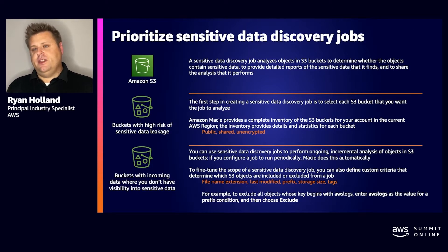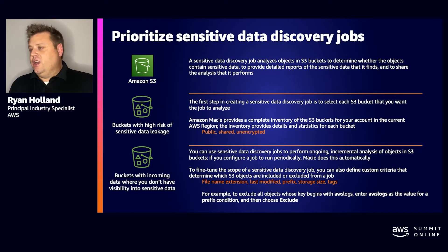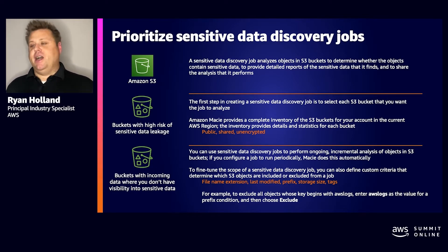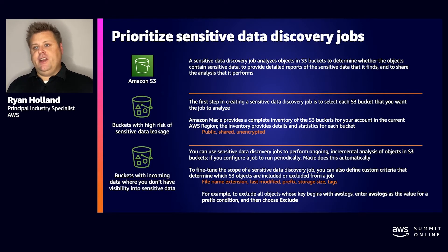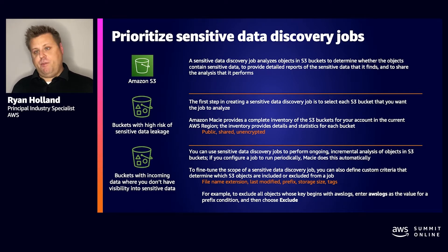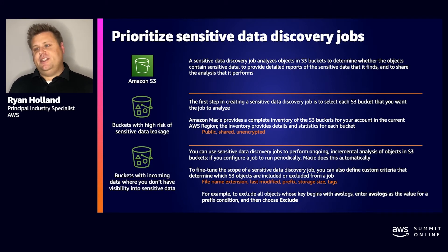The other important use case for this inventory and security metrics is to help you prioritize which buckets to include in a sensitive data discovery job. One of the most important best practices is that you do not typically want to point Macie at every bucket across all of your accounts. When you turn on Amazon Macie, the first 30 days is completely free for bucket inventory and monitoring, and after that it's only 10 cents a bucket per month. However, the cost is considerably higher for sensitive data discovery because we have to read all object contents to check for sensitive data identifiers.